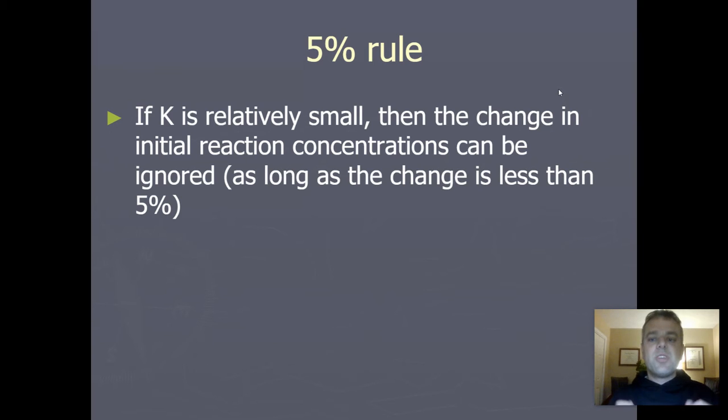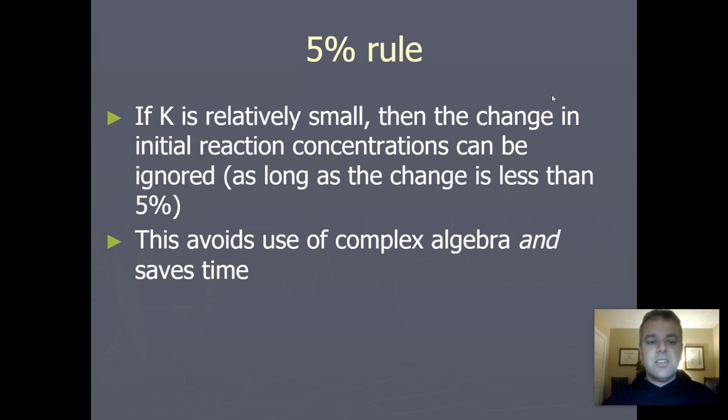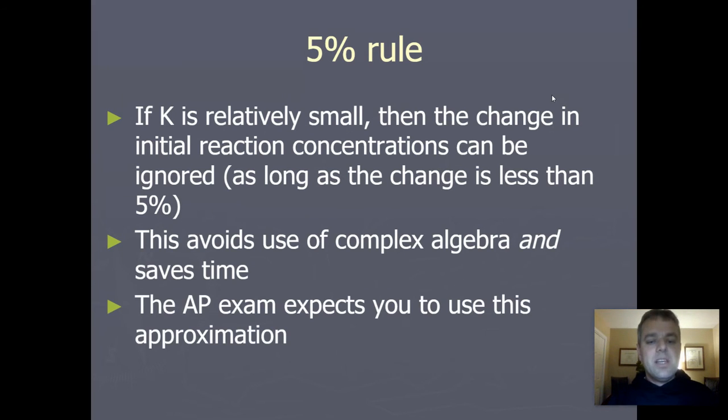So when that's the case, we're going to implement what's called the 5% rule. If our value of K is relatively small, then the change in initial reaction concentrations can be ignored as long as that change is less than 5%. This avoids the use of complex algebra, and it saves time, and the AP exam expects us to use this approximation.